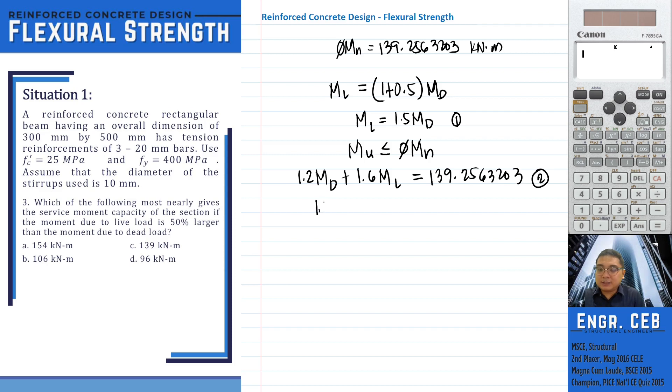By the way, in solving this, we can use our calculators. We can use the function in our calculator, mode 5, and then two unknown equations. Press 1. We will just need to input the coefficients. The coefficient of M sub D for the second equation is 1.2. For M sub L, that is 1.6. And then the constant value is 139.2563203.